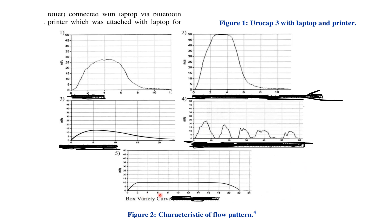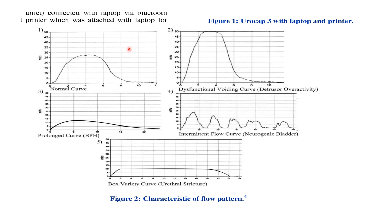The fifth graph also has a prolonged curve with a little flow and a plateau phase, which is due to strictures or obstruction. To summarize: the normal graph has a bell-shaped curve; dysfunctional voiding with detrusor overactivity shows a sudden rise then falls; prolonged curves are seen in benign prostatic hyperplasia; intermittent flow is seen in neurogenic bladder where the bladder exceeds capacity and repeatedly leaks; and urethral stricture also shows a prolonged curve.